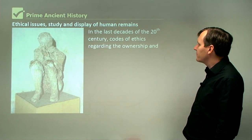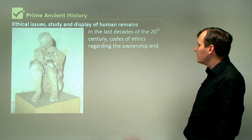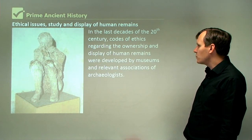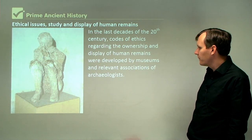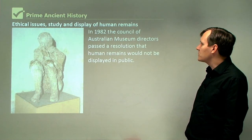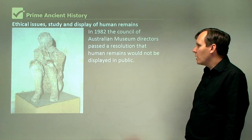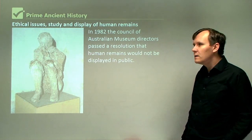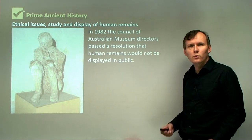In the last 50 years attitudes to the display of human remains have changed in many Western countries, though attitudes change from country to country. In the last decades of the 20th century, codes of ethics regarding the ownership and display of human remains were developed by museums and relevant associations of archaeologists. In 1982, the Council of Australian Museum Directors passed a resolution that human remains would not be displayed in public. Australia has been quite strict in the way they've dealt with this issue.